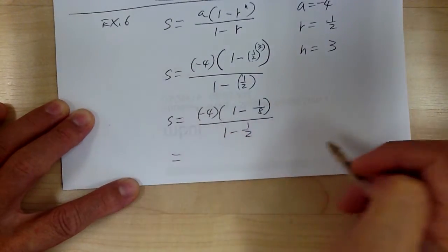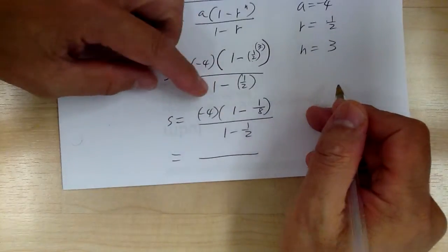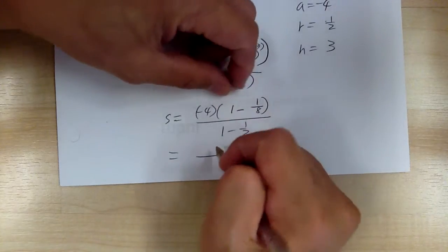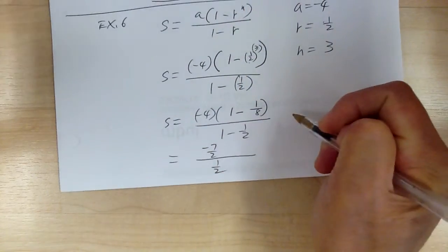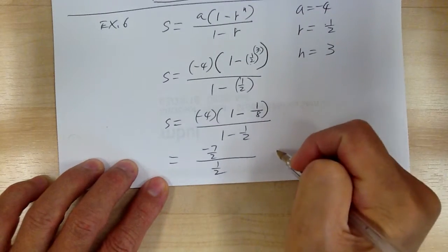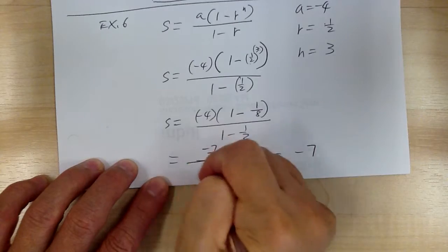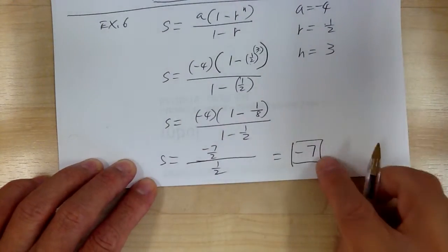And this one you can distribute. Or you can just work it out. Use your calculator. So this is 7 eighth. So it would be 7 over 2, negative. And so this would equal to negative 7. So you got negative 7 over 2, divided by 1 half, you get negative 7. And that's how you work this out.